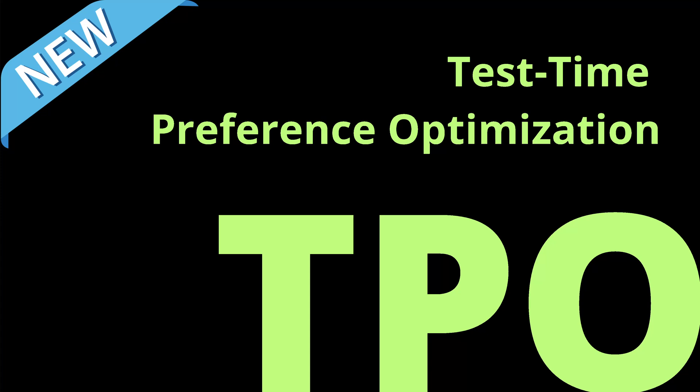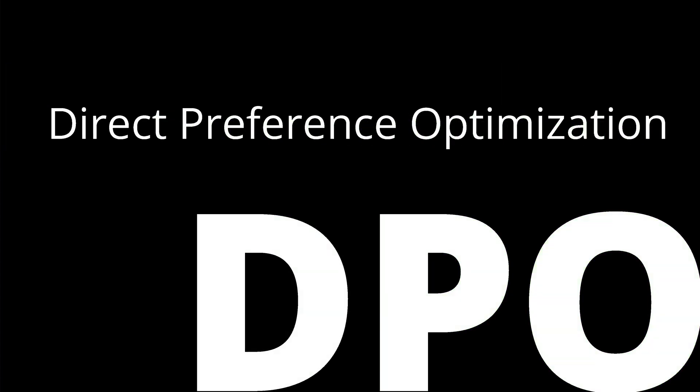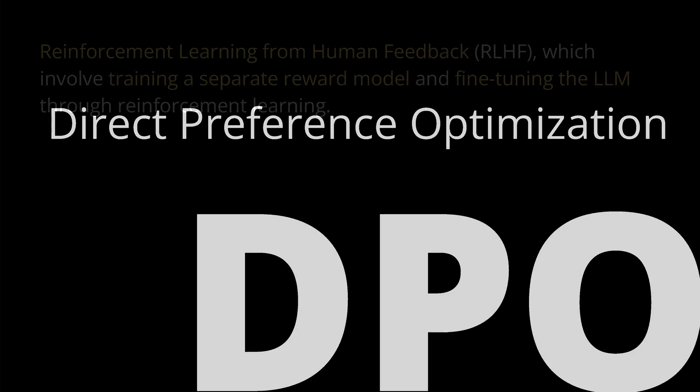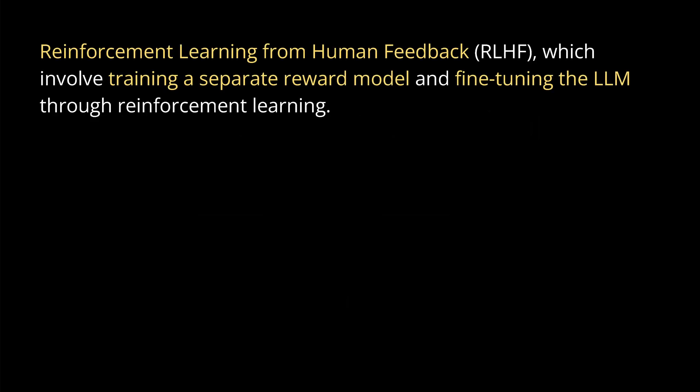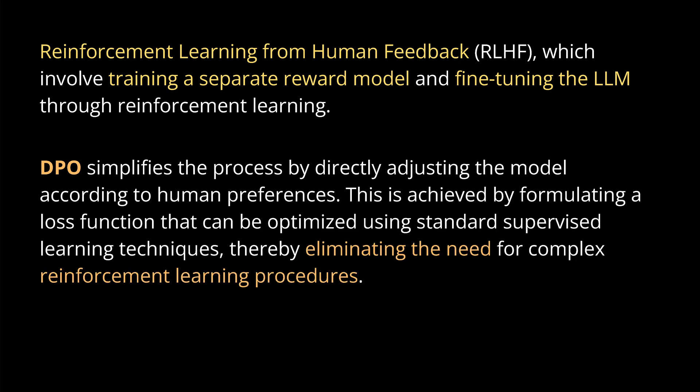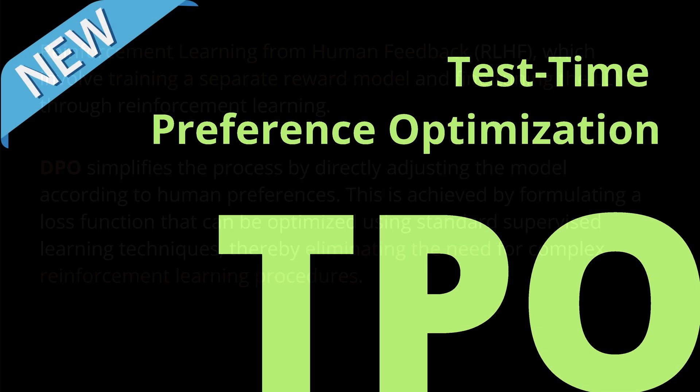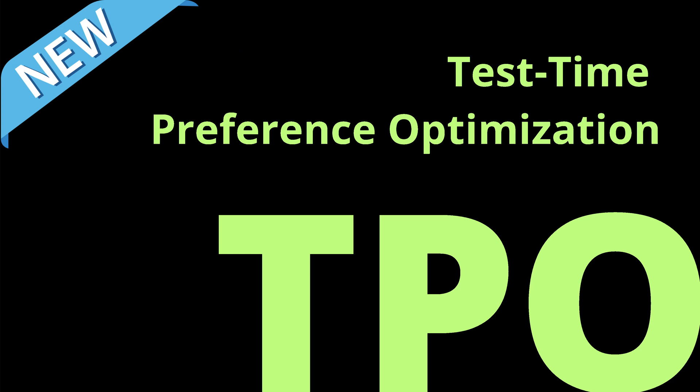Hello community! Today we have a brand new research called TPO. You might say, hey, you made a mistake — no, it is DPO new. You remember direct preference optimization. First we had reinforcement learning from human feedback from OpenAI, then DPO eliminating the need for complex reinforcement learning procedures. Now we have something brand new: test time preference optimization.